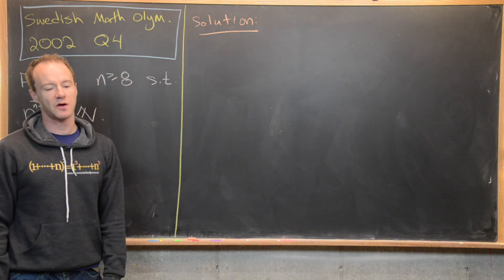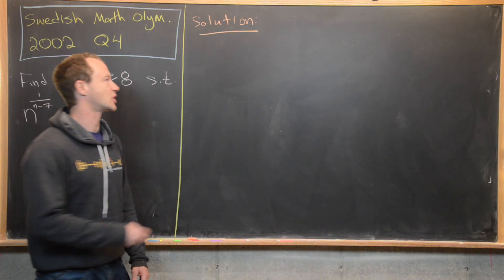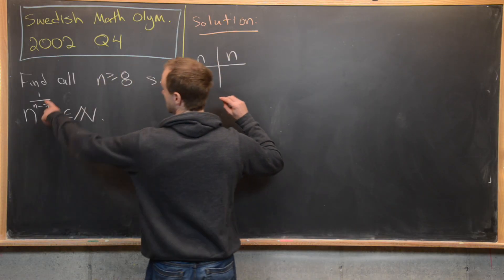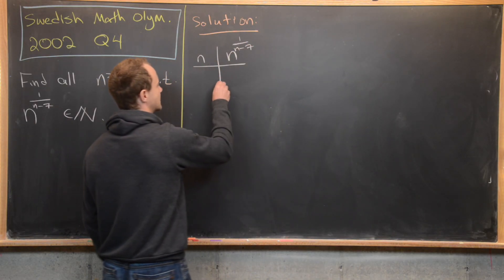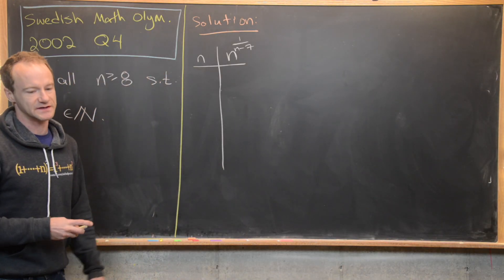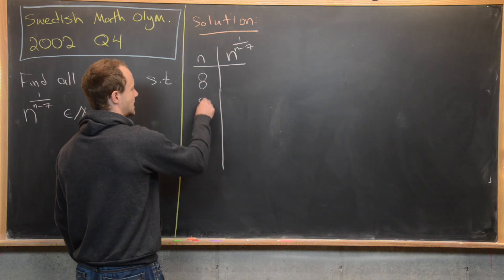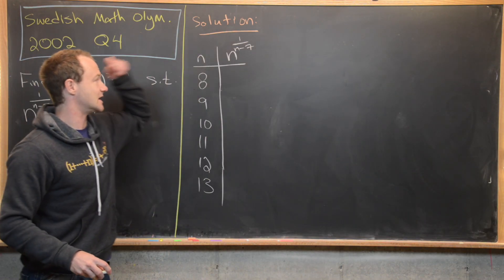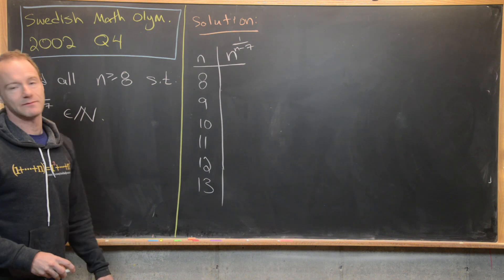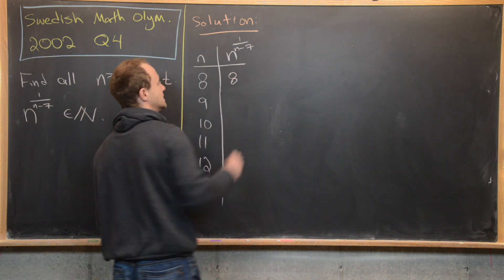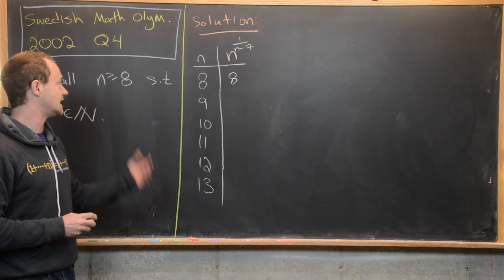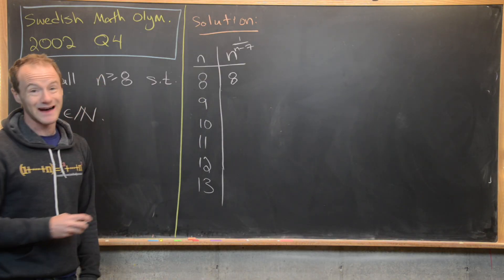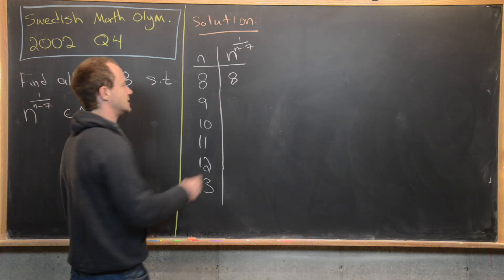Now we're ready to look at a solution. We'll start with exploration — a chart of values of n and n to the 1 over (n minus 7). For n = 8, we get 8 to the 1 over 1, which is 8. So n = 8 is a solution. For n = 9, we get 9 to the 1/2, which equals 3 — another solution.